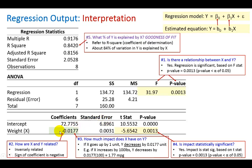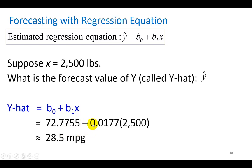Notice it's a negative value and that's why this is negative multiplied by the value of X of 2500. You work it out and you find that for a vehicle weighing 2500 pounds miles per gallon is going to be about 28.5.